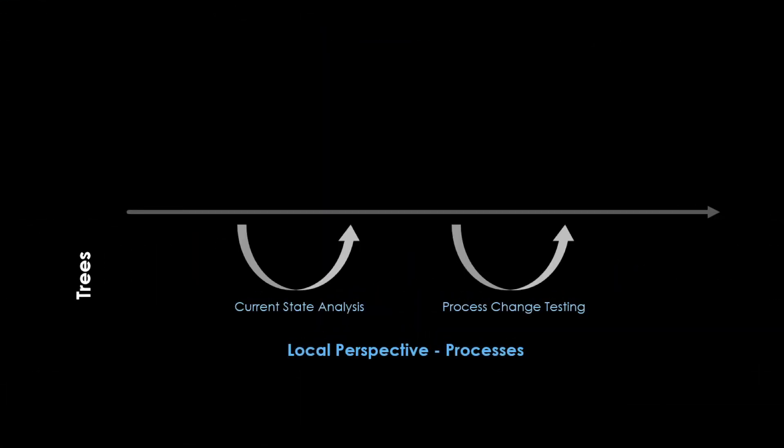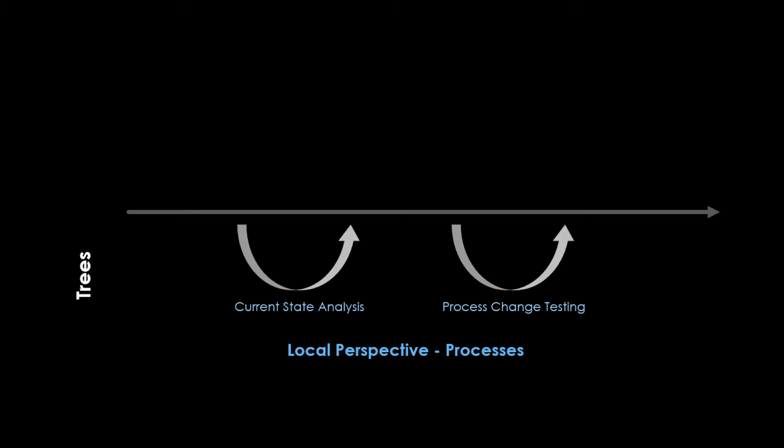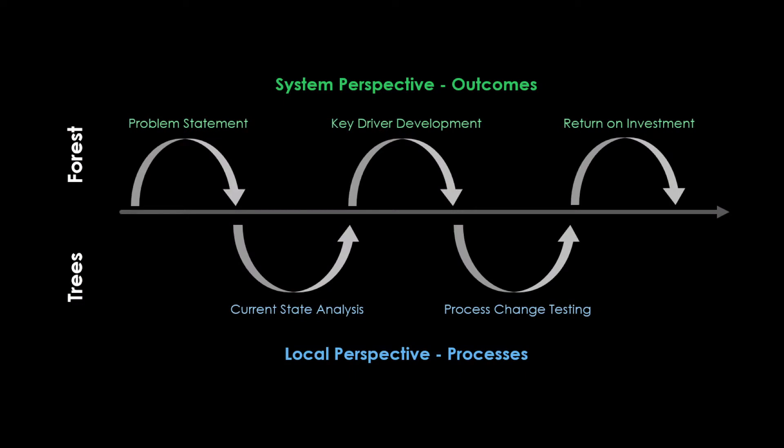To make sure improvement teams can problem-solve effectively and see the forest for the trees, they must shift their perspective periodically from the tree view to the forest view. In the forest view, your team can see all of the conditions necessary to be successful. We refer to these conditions for success as key drivers. I want to emphasize my use of the word conditions, not changes. Changes are all the ideas your team can't wait to test. Key drivers are the conditions that those changes must satisfy to be worthy of implementation. So the better your key drivers are, the more likely your team is to come up with change ideas that will be successful.